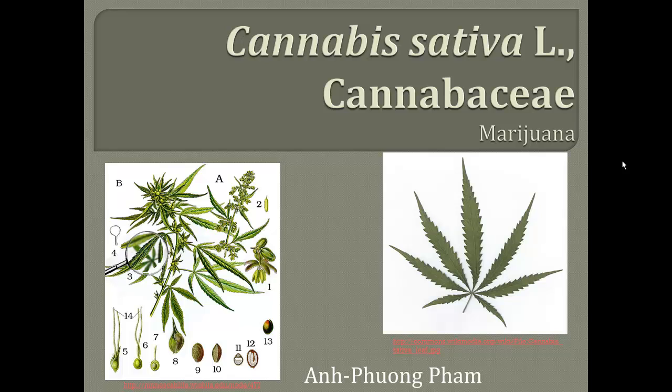In the left figure, I have a picture of both the female and male plants. B represents the female plant, and A is the male plant. In the right figure, I have a picture of a cannabis leaf, which has a really recognizable structure. It usually has seven or five leaflets poking out of a center point.